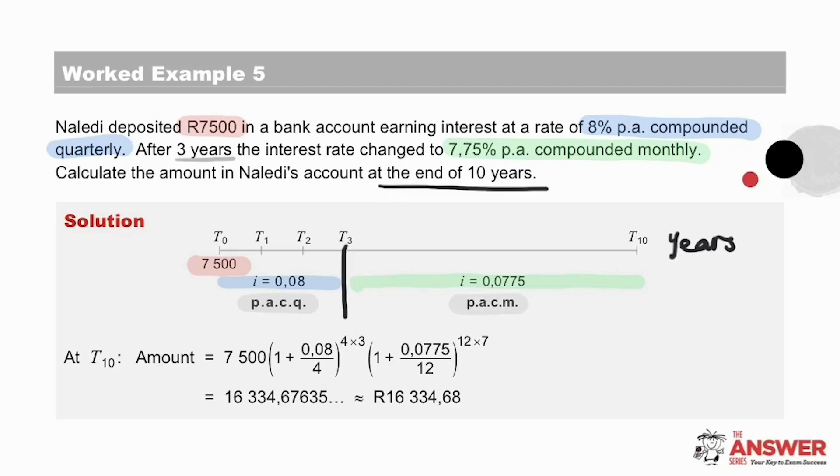Remember, we have been asked to calculate what is in the account at the end of the 10 years, at T10. If we look at the calculation, we'll see that the initial deposit, 7,500, will have this compounding factor 4 times a year for 3 years, and then this compounding factor 12 times a year for 7 years. And there is our final answer rounded off for the amount in Naledi's account at the end of the 10-year period.